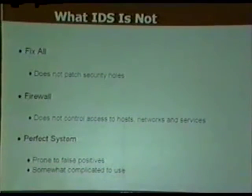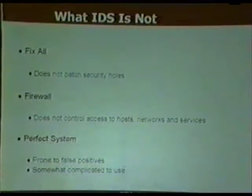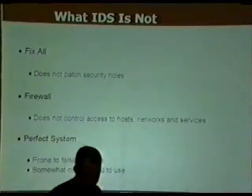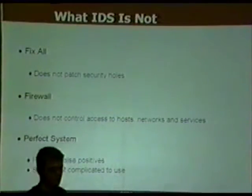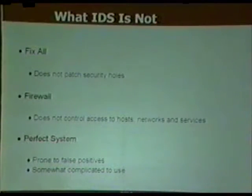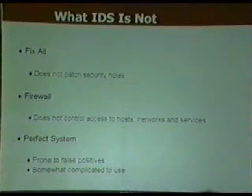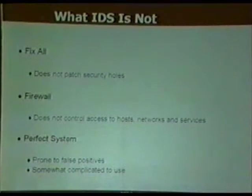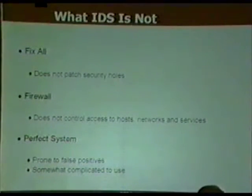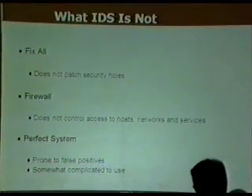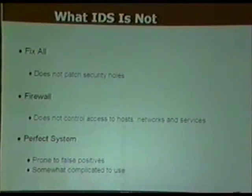Anomaly detection tends to appear mainly in government and research organizations that have the resources and time to do data mining and look at more detailed information. What intrusion detection is not is a fix-all. A lot of people think that if they have an IDS it's going to tell them someone's trying to break in and everything will be fine, but that isn't the case.